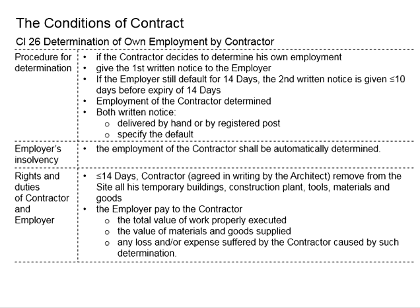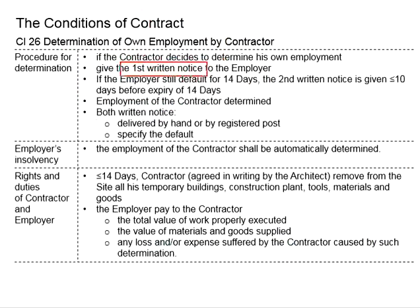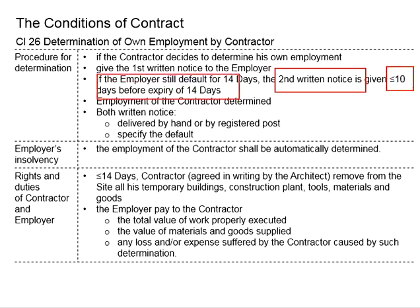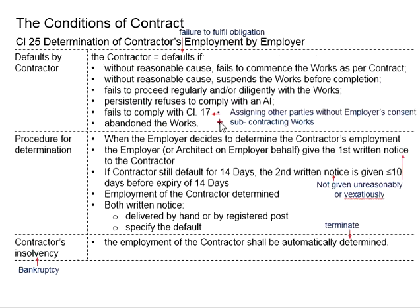If the contractor decides to determine himself from the employment, it builds on the basis that the employer is in default. The contractor will need to give a first return notice to the employer. This first return notice serves as a warning to see any intention of the employer to rectify it. If the employer still remains in default for 14 days, the second return notice may be given within 10 days before the expiry of those 14 days. This procedure is similar to the employer determining the contractor's employment, but in reverse.